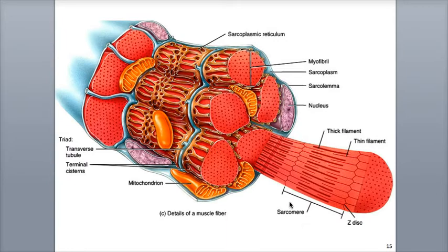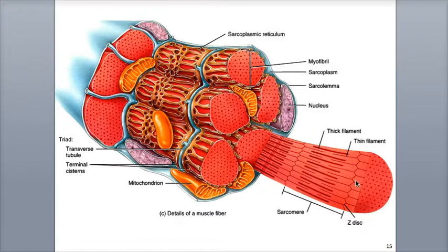The filaments are organized in groups called sarcomeres, which are the functional contractile units of the myofibril. Dense protein clusters called Z-discs are located in between each of the sarcomeres, at each of their ends.